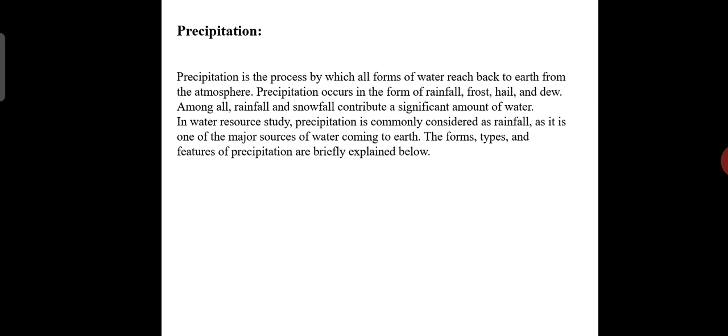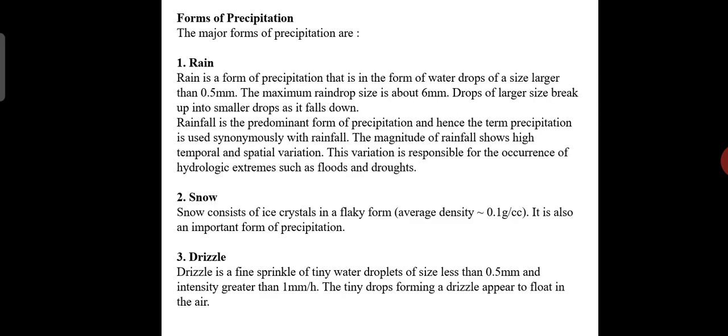In water resource study, precipitation is commonly considered as rainfall as it is one of the major sources of water coming to Earth. The forms, types, and features of precipitation are briefly explained here. One by one, we are going to see the forms of precipitation.